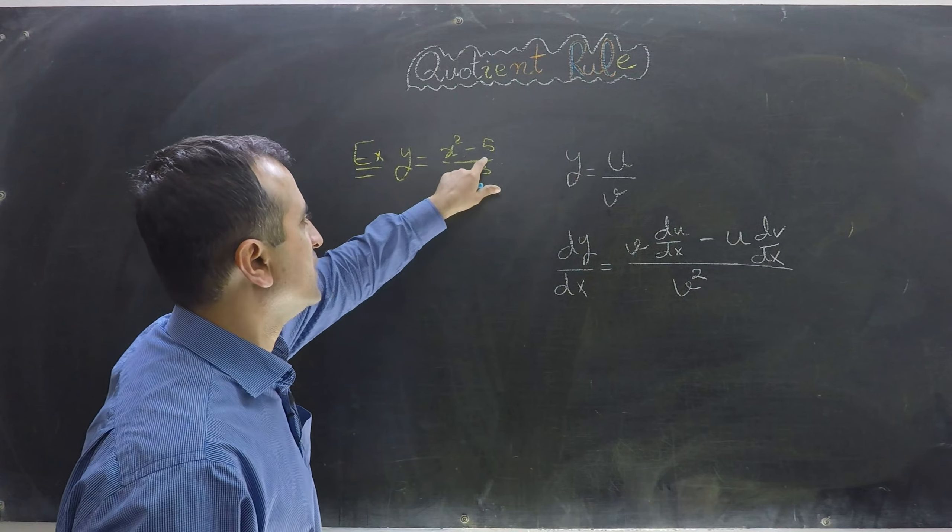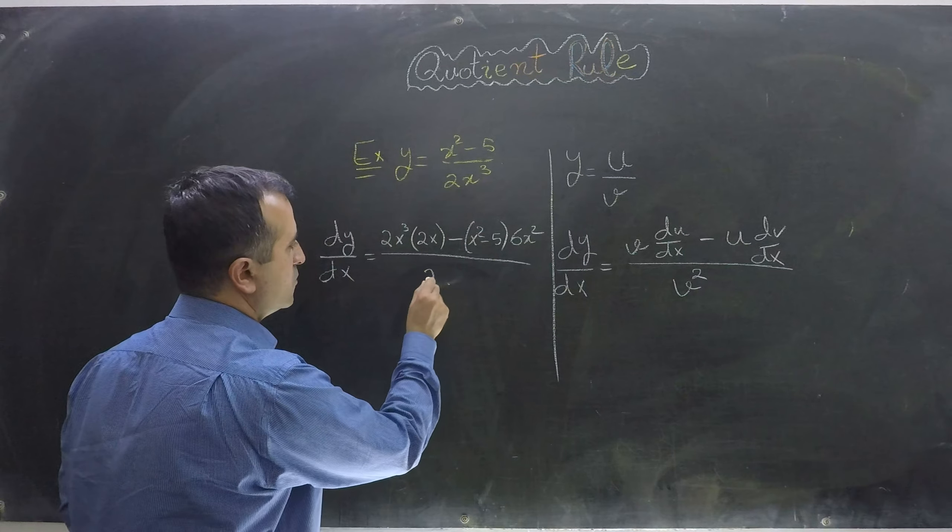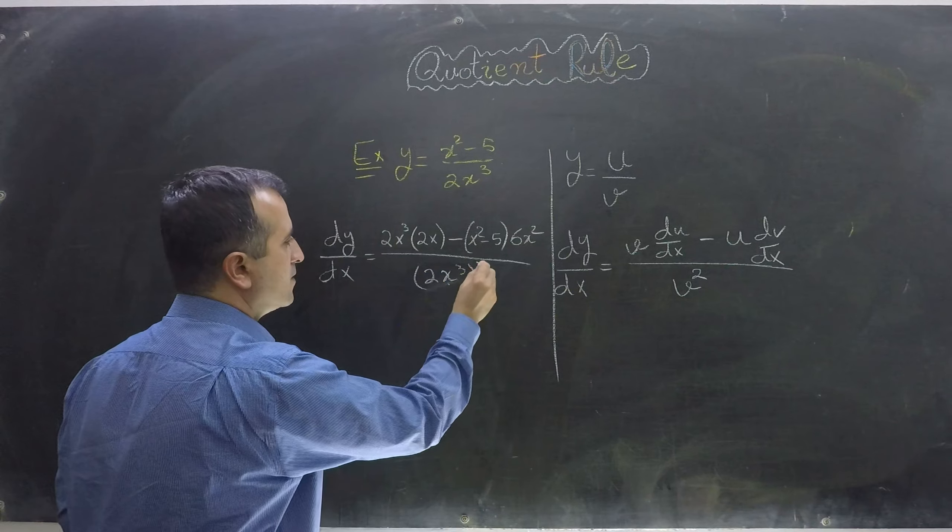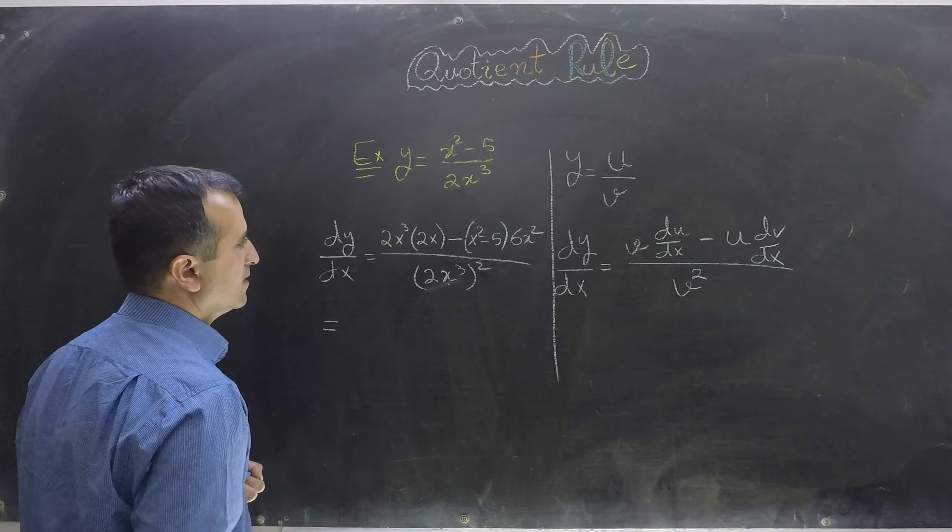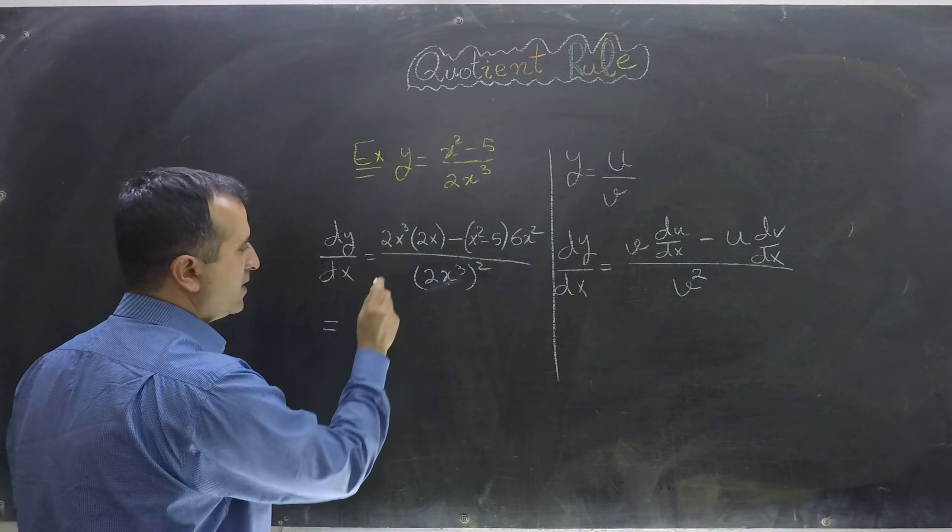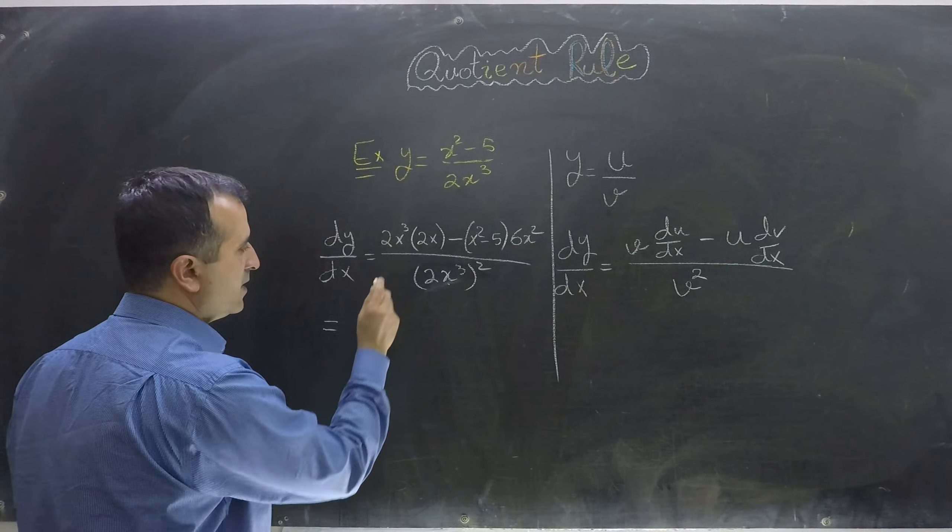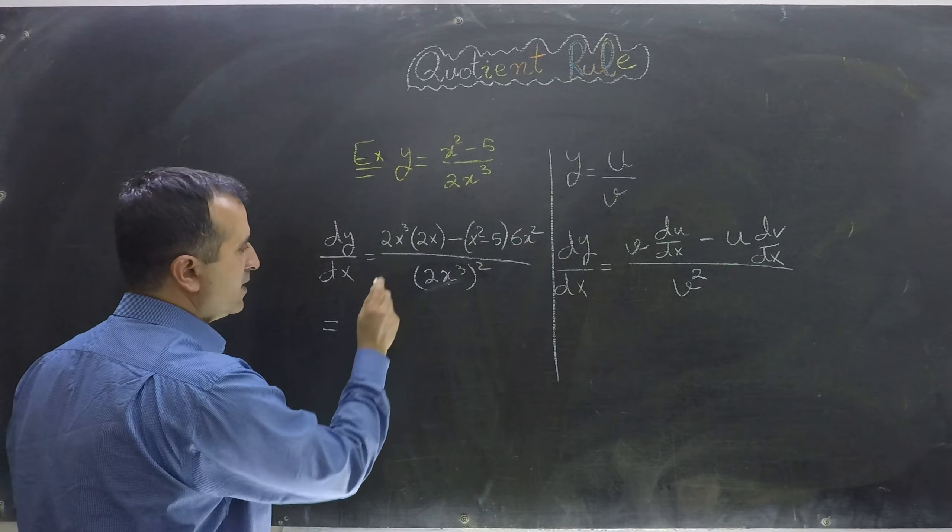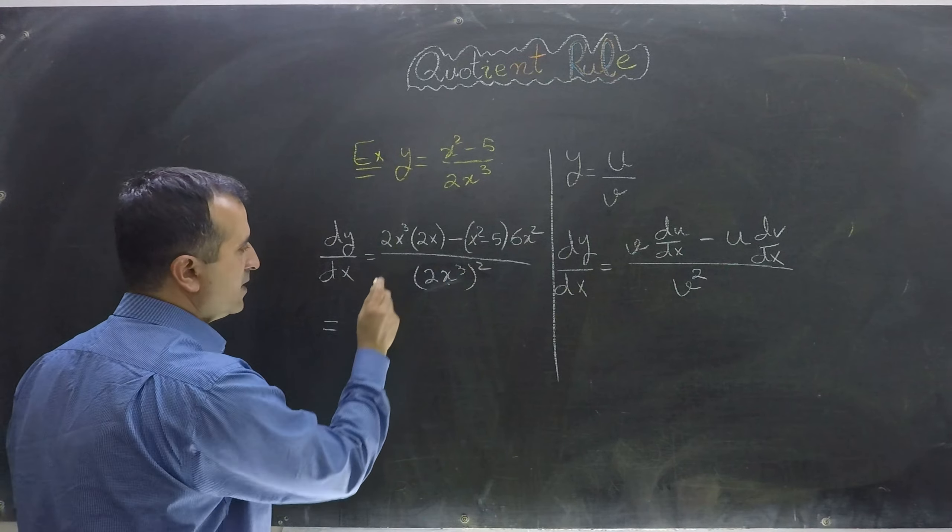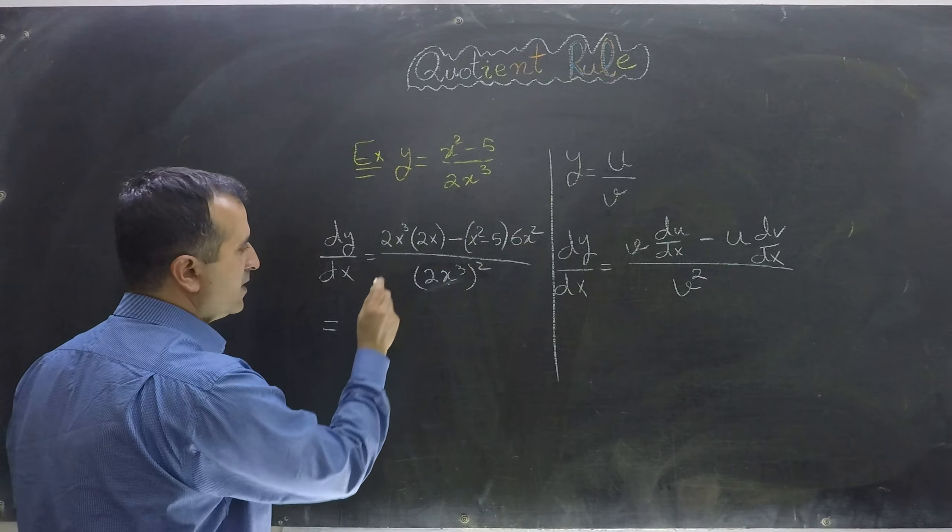So my derivative dy over dx is: I first keep my denominator as it is and multiply it with the derivative of numerator which is 2x, minus I keep my numerator as it is and multiply it with the derivative of denominator which will be 6x squared, divided by square of denominator 2x cubed whole square.